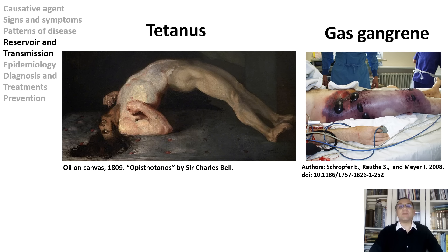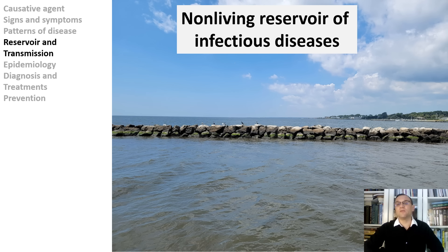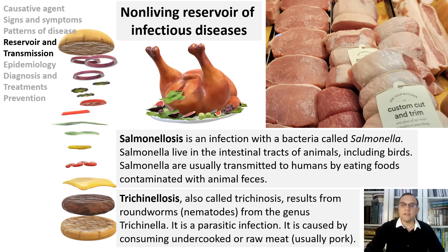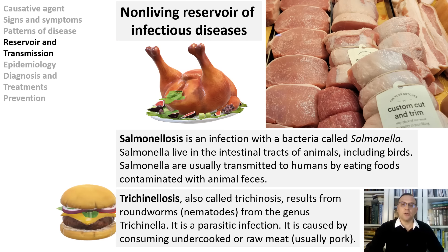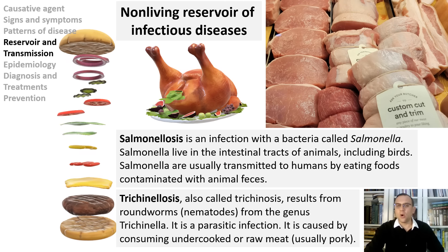Another good example of a non-living reservoir is water contaminated by feces of humans and other animals — it is a reservoir for several pathogens, notably those responsible for gastrointestinal diseases, including Vibrio cholerae, which causes cholera, and Salmonella typhi, which causes typhoid fever. Non-living reservoirs also include foods that are improperly prepared or stored — a source of diseases such as salmonellosis or trichinellosis. Trichinellosis results from roundworms and is caused by consuming undercooked or raw meat, usually pork.